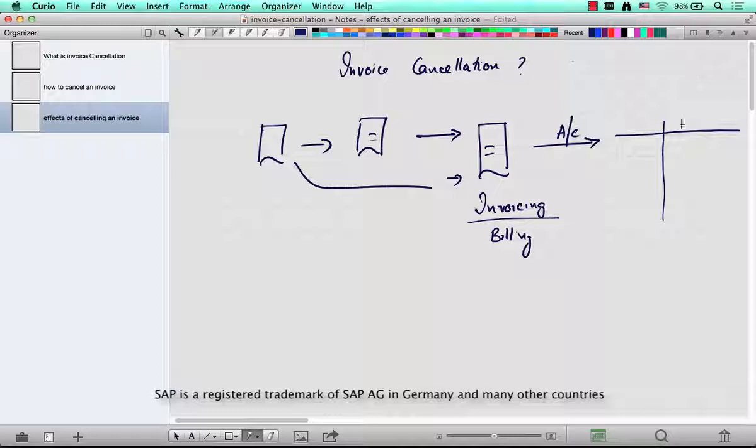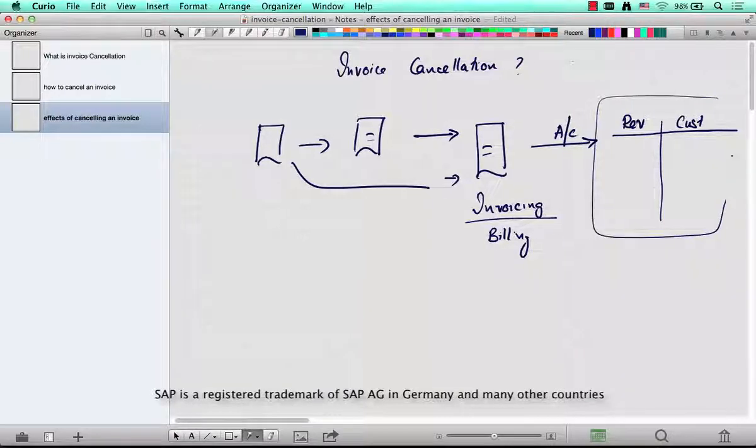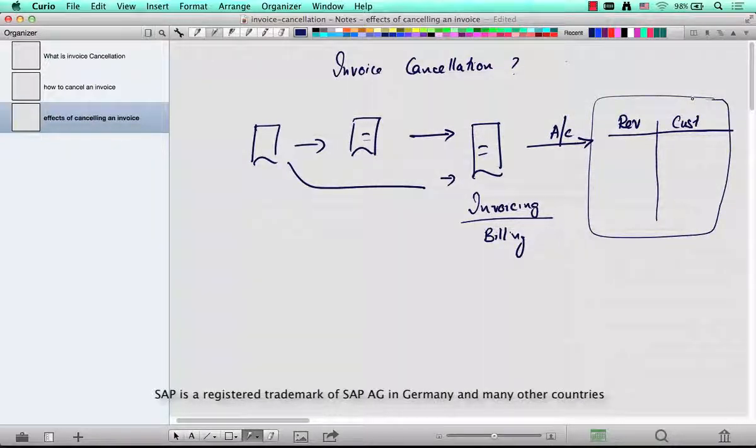And what are the accounts that are hit? Customer and revenue accounts. When you cancel an invoice, you're effectively canceling this, but the way it's canceled is a little different. It's not very straightforward.